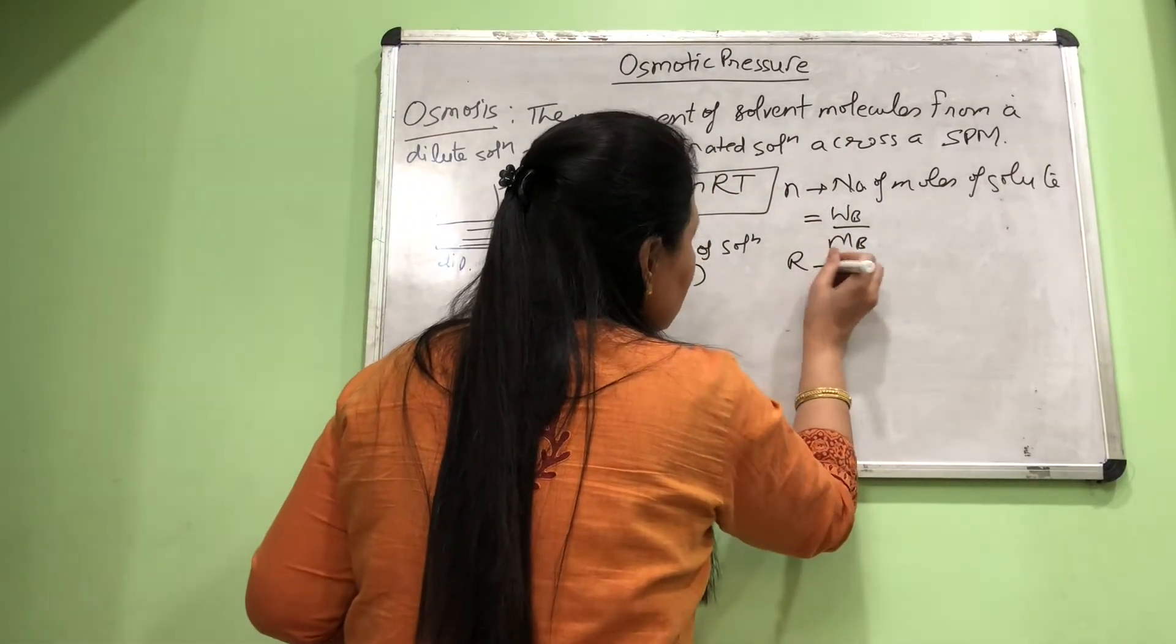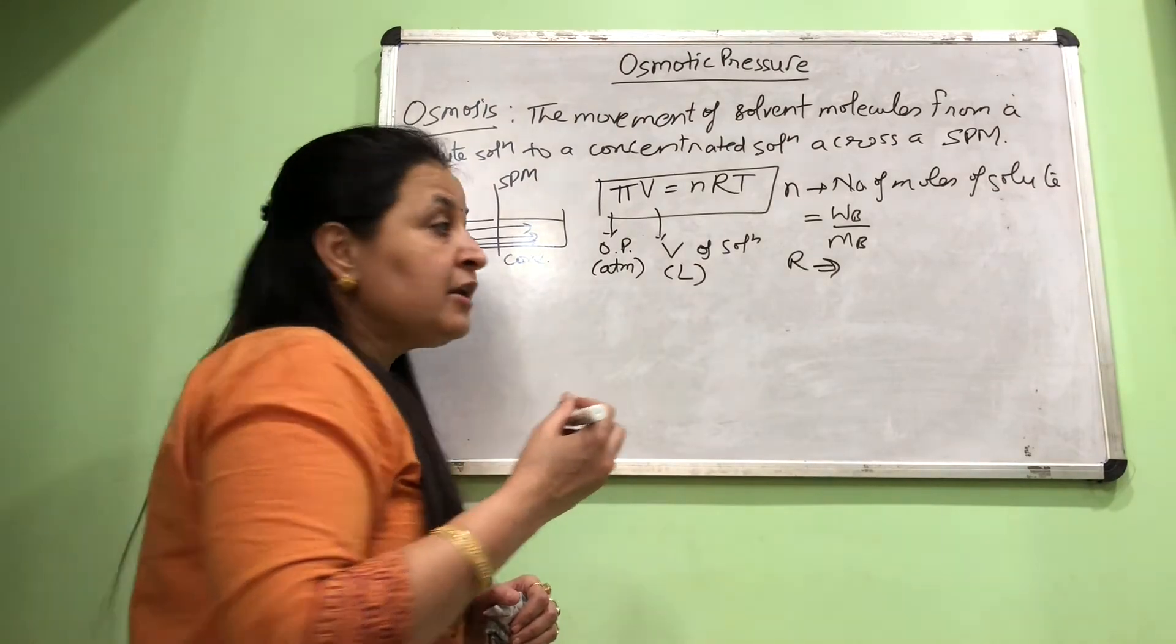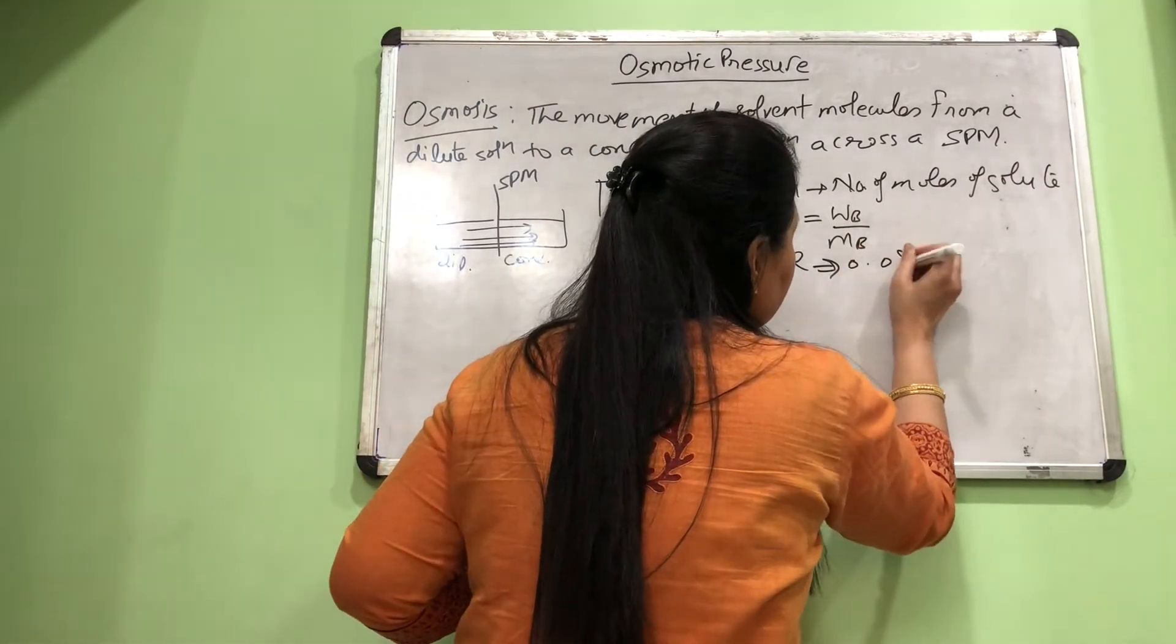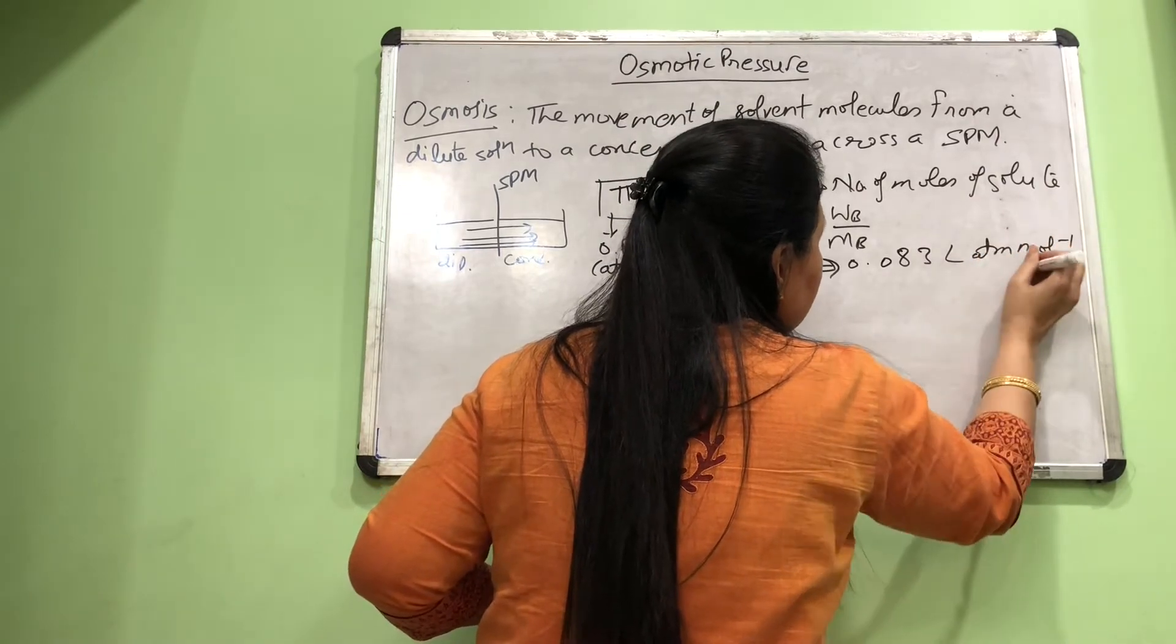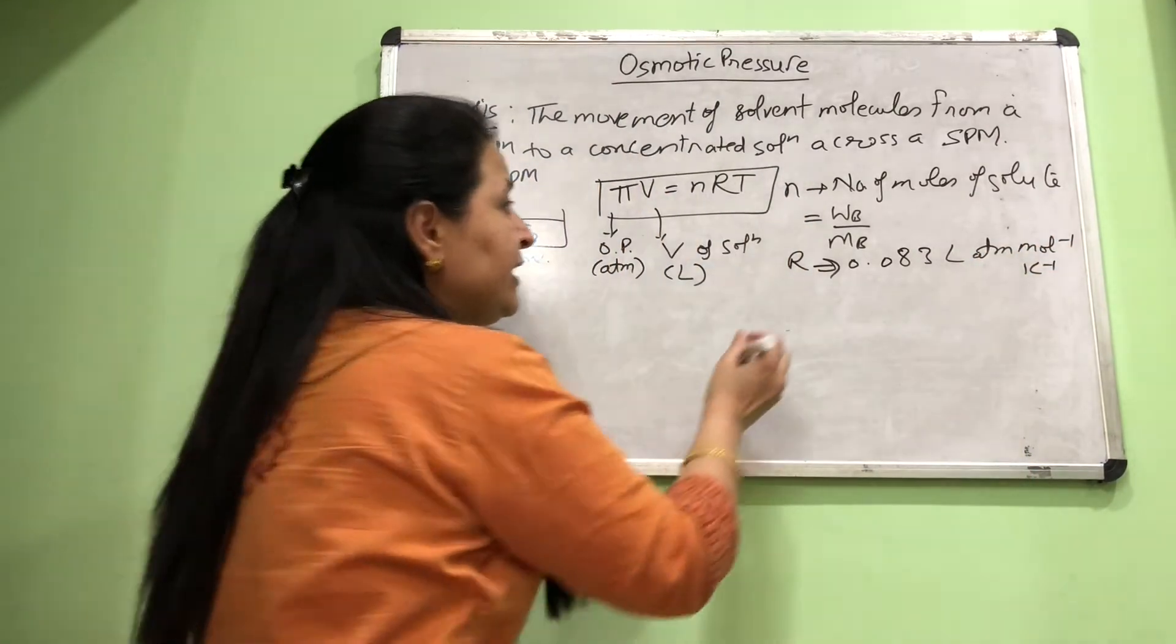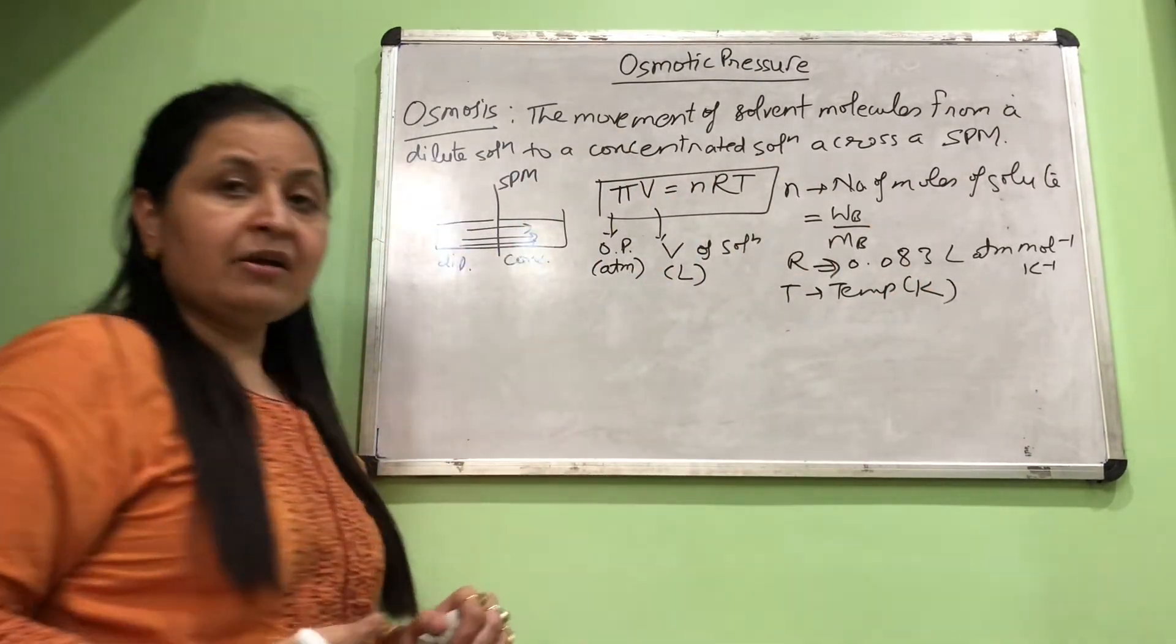What is R here? The universal gas constant. Which value should we use? 0.083 liter atmosphere per mole per kelvin. We will use this value: liter atmosphere mole inverse kelvin inverse. Then T is the temperature and it should be in kelvin.